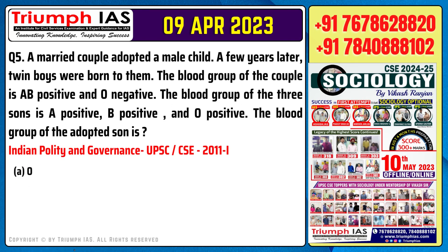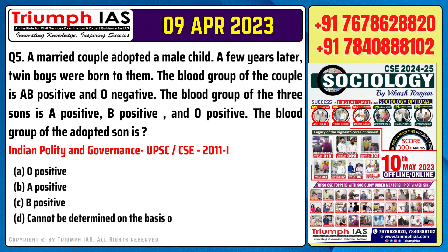Question number 5. A married couple adopted a male child. A few years later, twin boys were born to them. The blood group of the couple is AB positive and O negative. The blood group of the three sons is A positive, B positive and O positive. The blood group of the adopted son is: Option 1: O positive. Option 2: A positive. Option 3: B positive. Option 4: Cannot be determined on the basis of the given data.